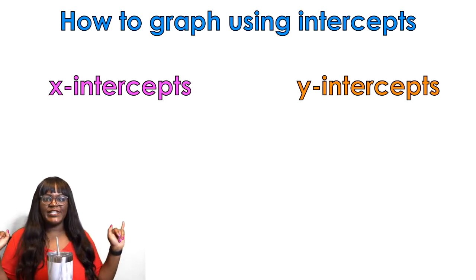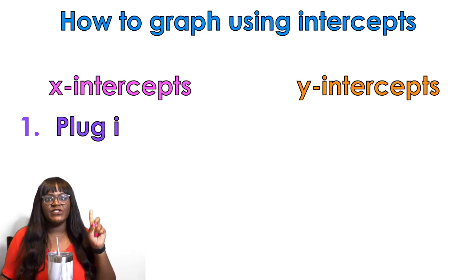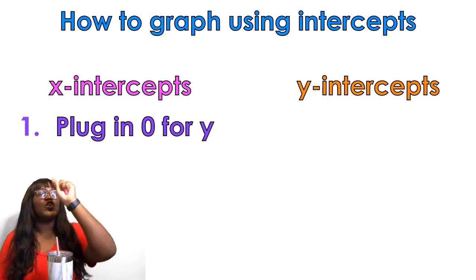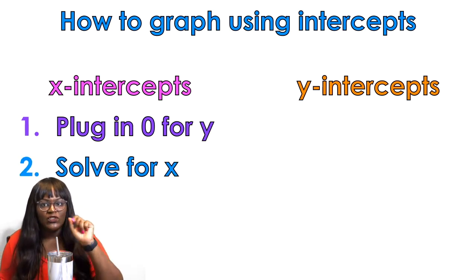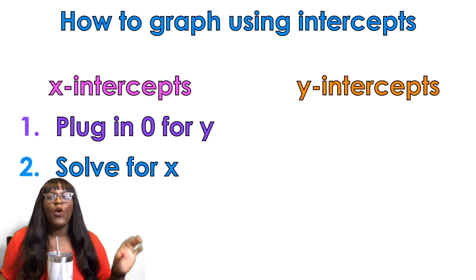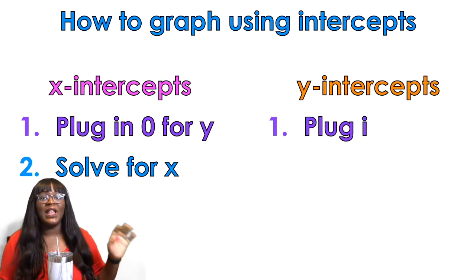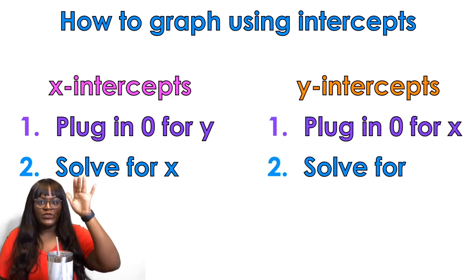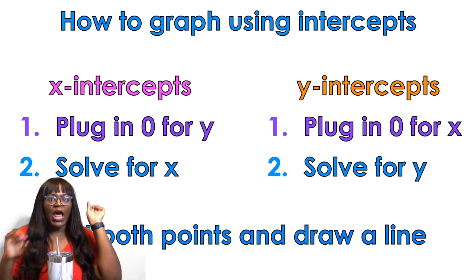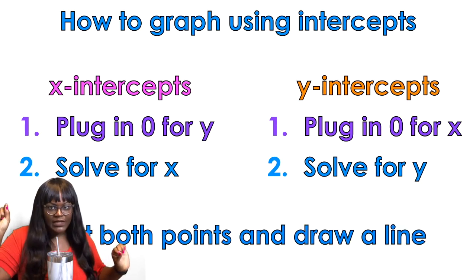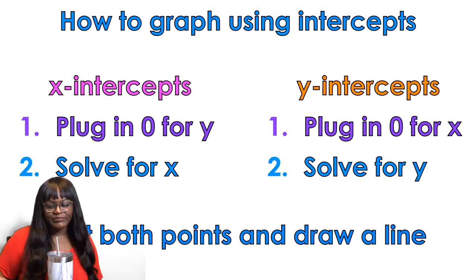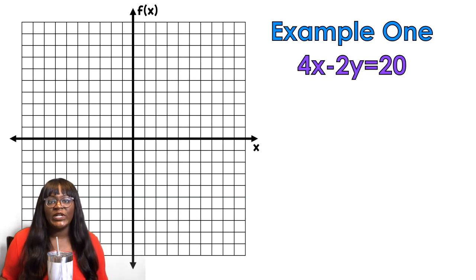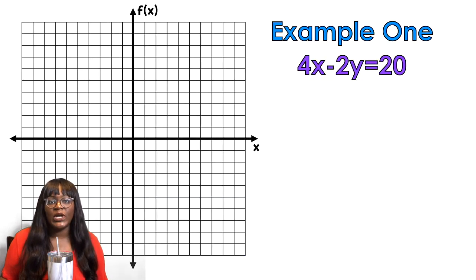Okay, how to graph using intercepts. For x-intercepts, you plug in zero for y and solve for x. Y-intercepts is the opposite — you plug in zero for x and solve for y. Plot both points, then draw a line. If you haven't watched the video called 'What is an Intercept,' you should watch that because it gives background knowledge to what's happening here.